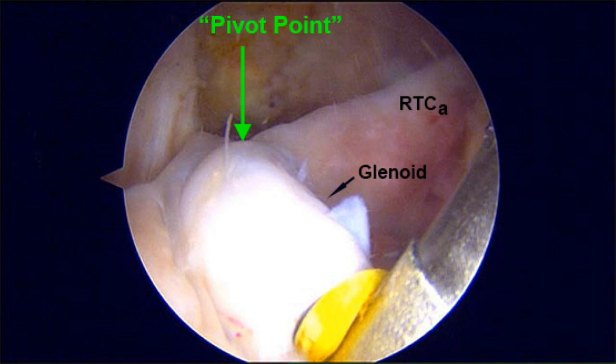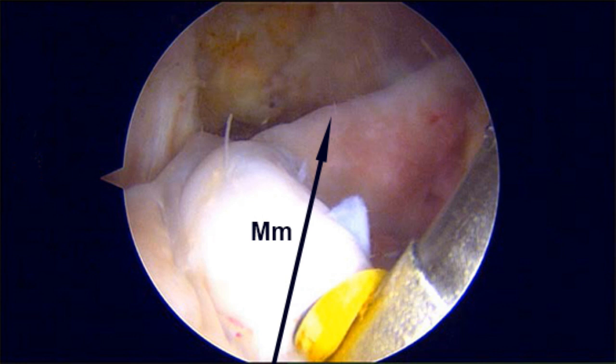Exposure of the greater tuberosity footprint indicates complete detachment of the majority of supraspinatus and infraspinatus. Extent of posterior medial retraction and displacement is appreciated here. Direction and magnitude of the first margin convergence suture are demonstrated.